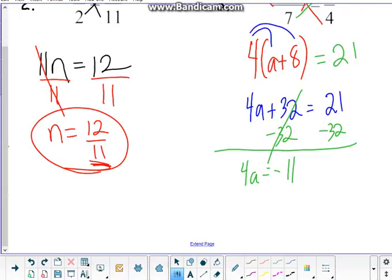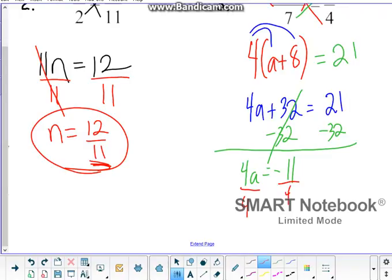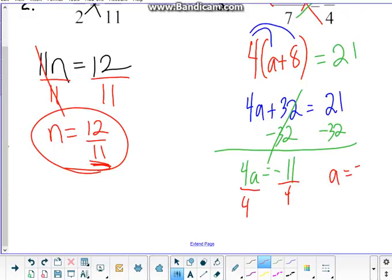Now, I can go ahead and do that division and divide by 4 on both sides. And then we have a equals negative 11 over 4. Again, that's not something that's going to be able to reduce. It's a gross looking fraction, but again, that doesn't mean that you did anything wrong.